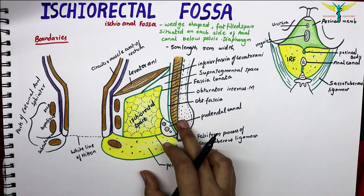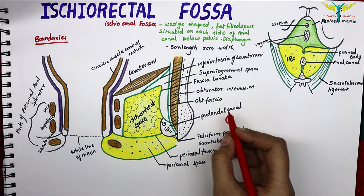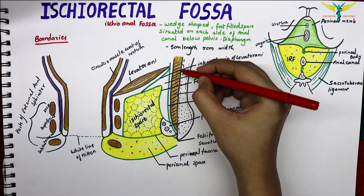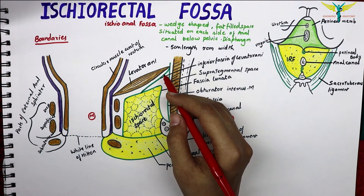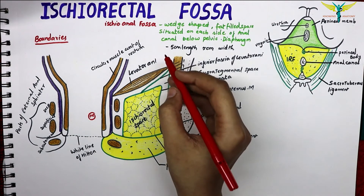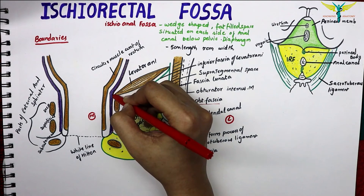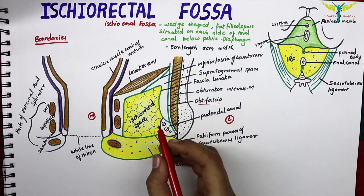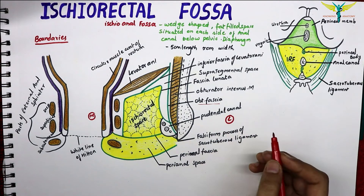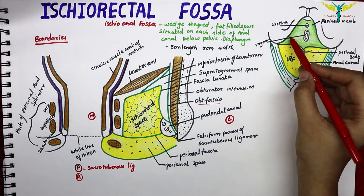Now let's talk about the boundaries. This is the lateral side. The lateral boundary is the fascia covering the obturator internus muscle and the ischial tuberosity. The medial boundary is formed by the fascia that covers the levator ani muscle and the external anal sphincter. The posterior boundary of the ischiorectal fossa is the sacrotuberous ligament. The anterior boundary is formed by the posterior border of the perineal membrane.